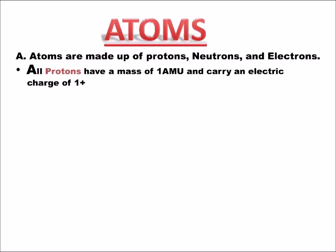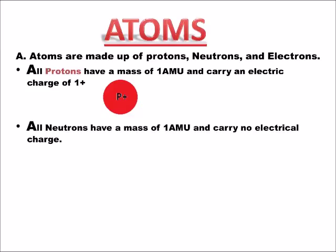Protons have a mass of one atomic mass unit, and each proton carries an electric charge of plus one. Here's a proton — it's labeled with a P and a plus sign because it carries an electric charge of one. Neutrons also have a mass of one atomic mass unit, but they carry no electric charge. Here's a neutron — you notice it has no positive sign on it.